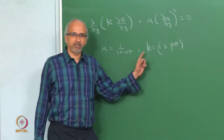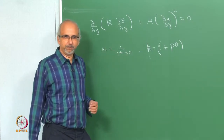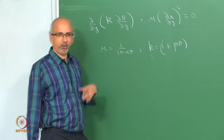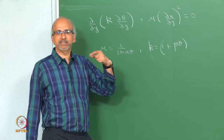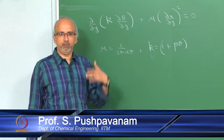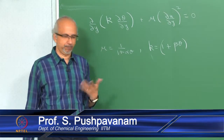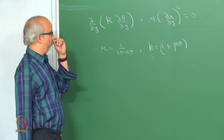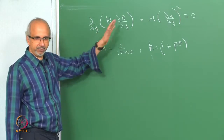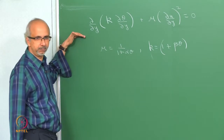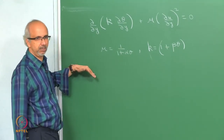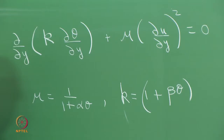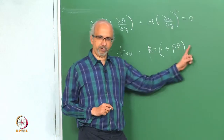We will continue today working on the problem of incorporating the effect of viscous heating in a viscometer. We are going to see how the estimation of viscosity is affected when you neglect versus include viscous heating. Since viscosity is a function of temperature, last class we worked on the momentum equation and today we take the energy equation and do a perturbation series analysis. We had assumed viscosity varying as 1/(1 + αθ) and k varying linearly with θ.